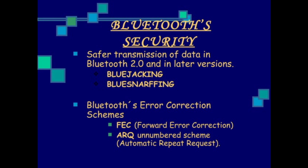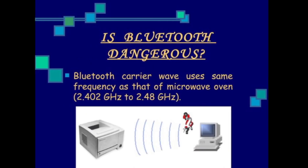The error correction scheme is called FEC — forward error correction. Additionally, ARQ — automatic repeat request — is also defined and used in Bluetooth.